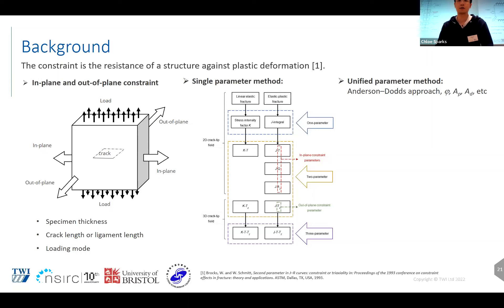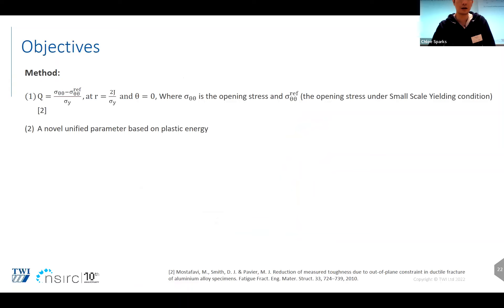But for all these widely accepted parameters, these were all validated, generally validated by the CT or SEMB samples. But for many industrial equipment, they experience multi-axial loading other than uniaxial loading. So it's also necessary to find the effectiveness of these parameters on the multi-axial effect. I'm sorry. Here's a mistake. There is no Q in this presentation. Sorry.